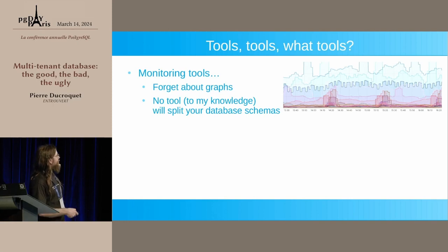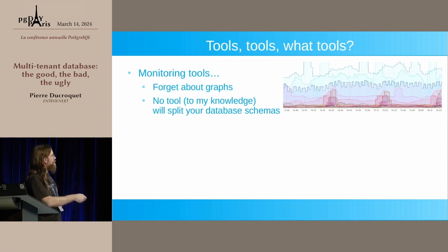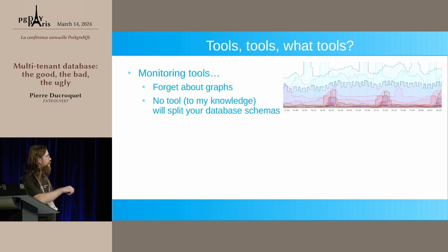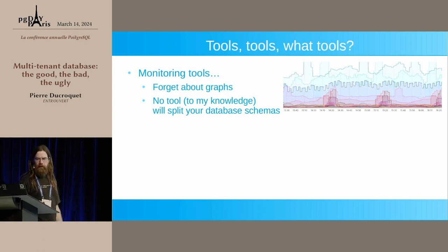Monitoring tools: I have no idea how to produce usable graphs with hundreds of databases. You see your big customers and a mass of small ones all together — you can't tell which one is complaining or why. Also, monitoring tools sometimes look at bare table and schema stats, generating even more lines on the graph. As far as I know, none of them actually support schemas — they don't tell you which schema is using more space or doing more queries, because the information isn't there or wasn't implemented.